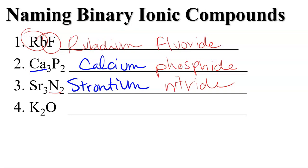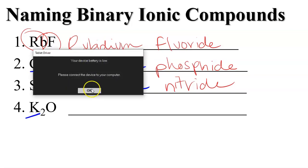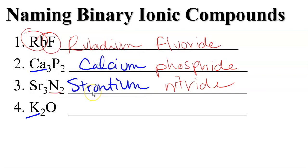This last one — our metal is potassium. K is potassium, and the anion it's connected with is oxide — potassium oxide.